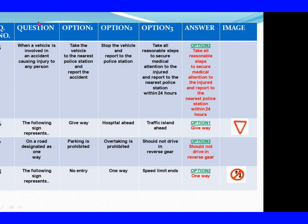Question 5: When a vehicle is involved in an accident causing injury to any person. Option 1: Take the vehicle to the nearest police station and report the accident. Option 2: Stop the vehicle and report to the police station. Option 3: Take all responsible steps to ensure medical attention to the injured and report to the nearest police station within 24 hours. The right answer is Option 3. Question 6: The following sign represents. Option 1: Give way. Option 2: Hospital ahead. Option 3: Traffic island ahead. The right answer is Option 1: Give way.